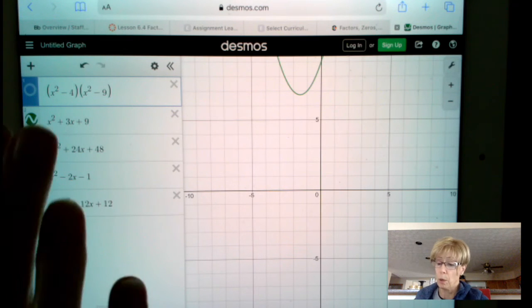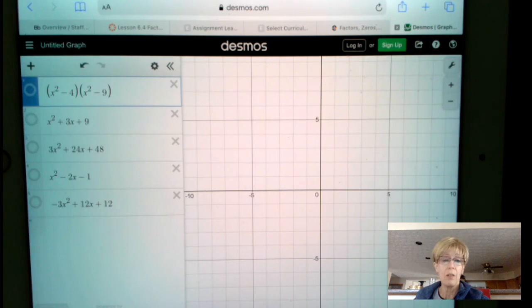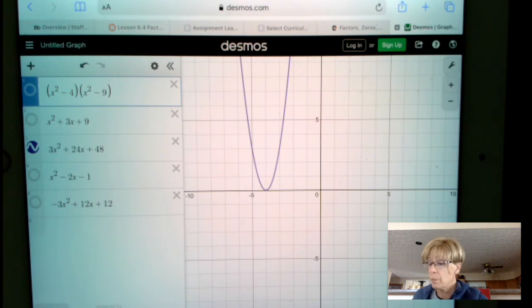Again, the question says something about multiplicity of 2. That means that our graph is only going to touch the x-axis. 3x squared plus 24x plus 48 does touch the x-axis.